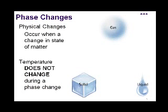Phase changes are physical changes — they occur when a change in state of matter happens. We add or remove heat to change the temperature to reach either a melting or boiling point. Importantly, the temperature does not change during a phase change. If we take a solid and want to make it a liquid, we add heat. For water, we'd add heat until the temperature reached zero degrees Celsius — the melting point. As the ice melts into liquid water, that temperature stays at zero degrees Celsius until it fully becomes a liquid.